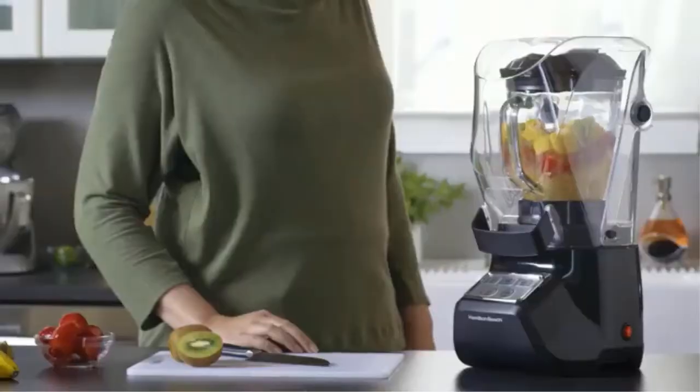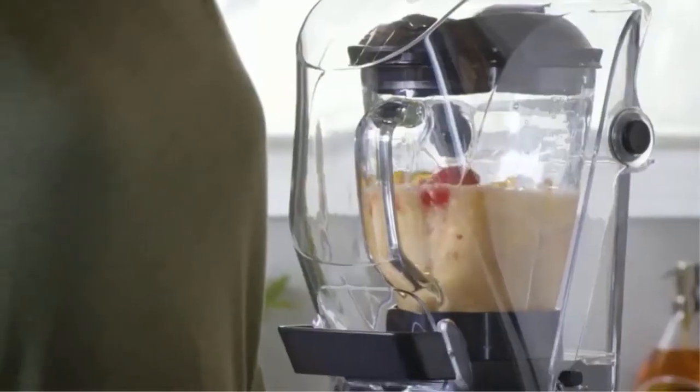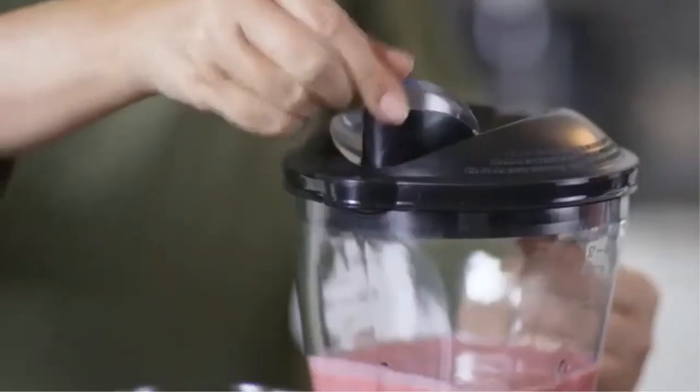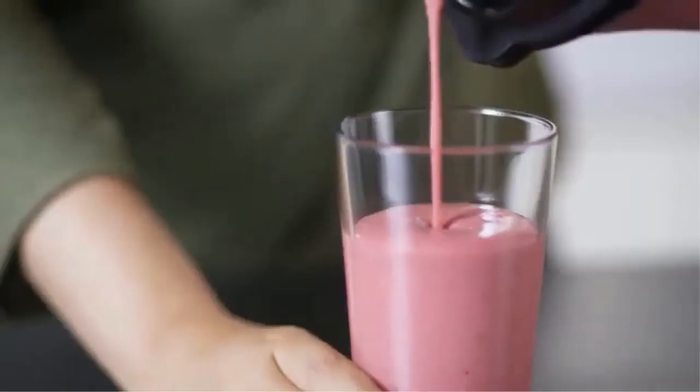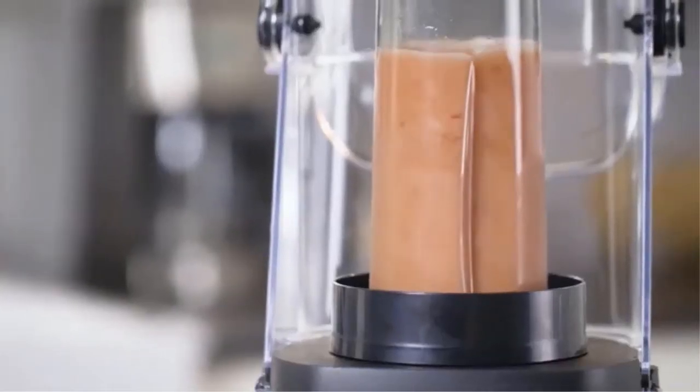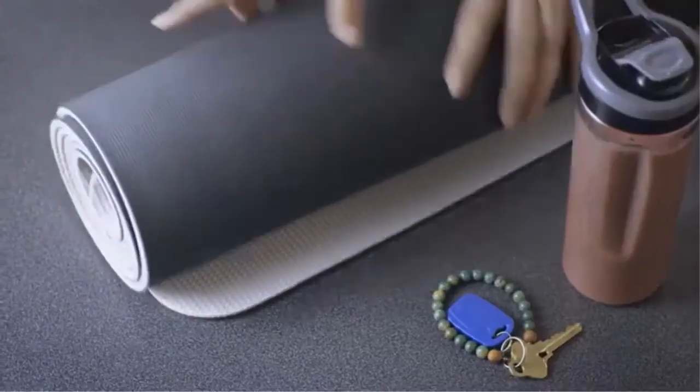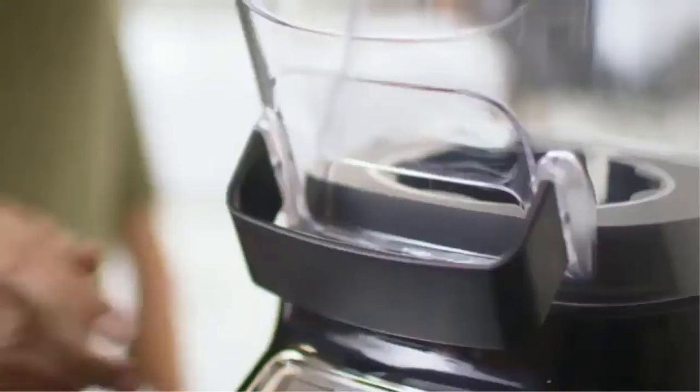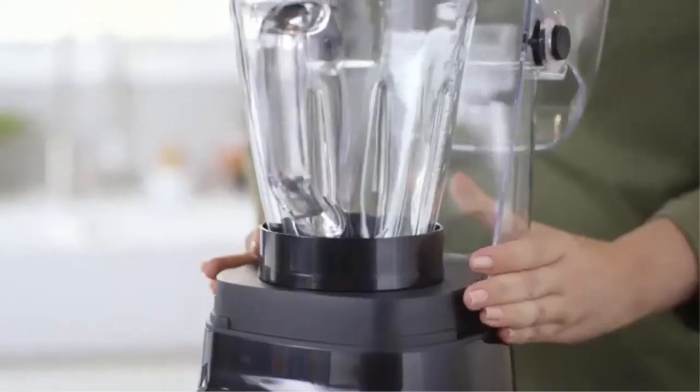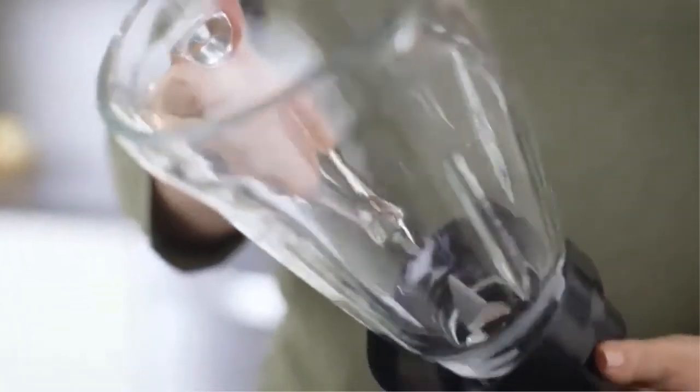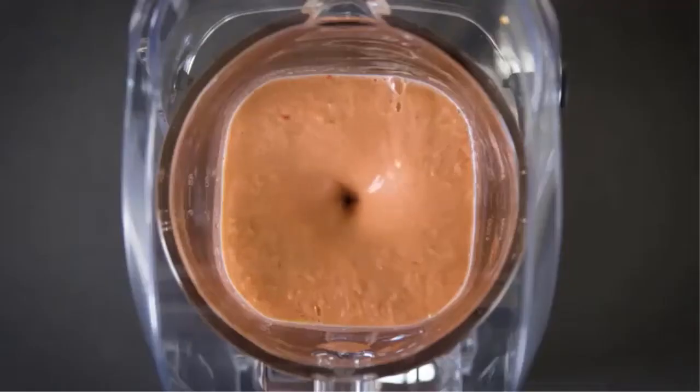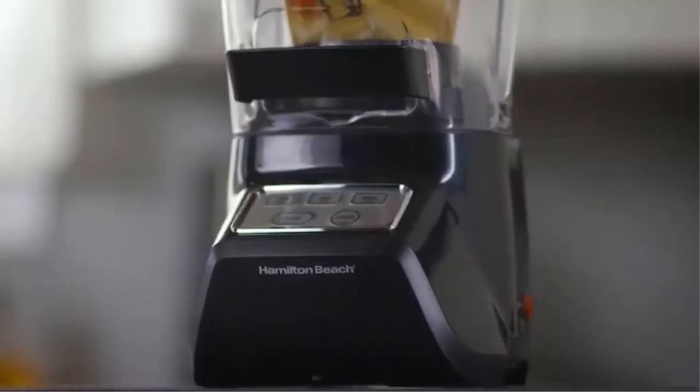The 52 ounce dishwasher safe glass jar has a spill stopping drip-free pour spout to minimize the mess. It's easy to blend your own smoothies to go with the included 20 ounce blend-in travel jar. It's also easy to clean. Just lift, press, and slide the sound shield to remove. The blades also remove for cleaning. It's a snap.